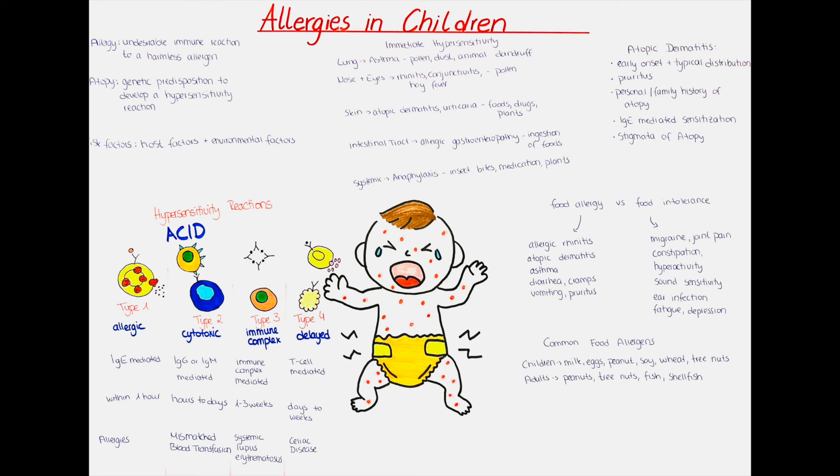The other form is the non-IgE-mediated form, also called anaphylactoid reaction. It is similar to true anaphylaxis, but an IgE immune reaction is not required. It is caused by direct stimulation of the mast cells and basophils, but the same chemical mediators are released, which have the same effect on the body. This reaction can happen on the first contact to an allergen, so no sensitization is required.